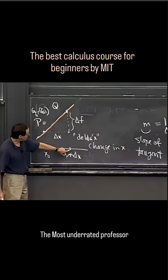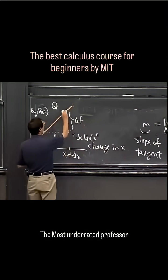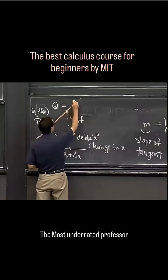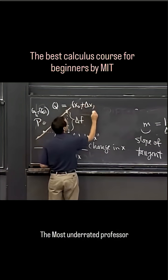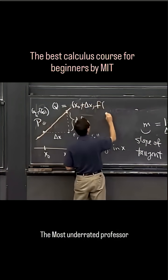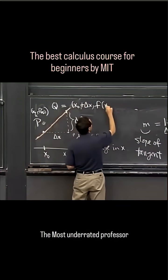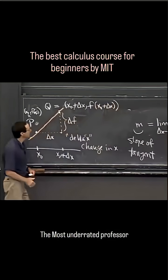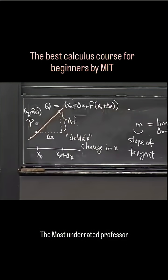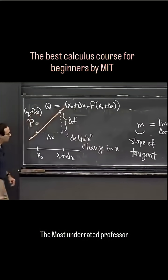And so the point above that point has a formula, which is x0 plus delta x, f of x0 plus delta x. So there's the formula for the point q. Here's the formula for the point p.